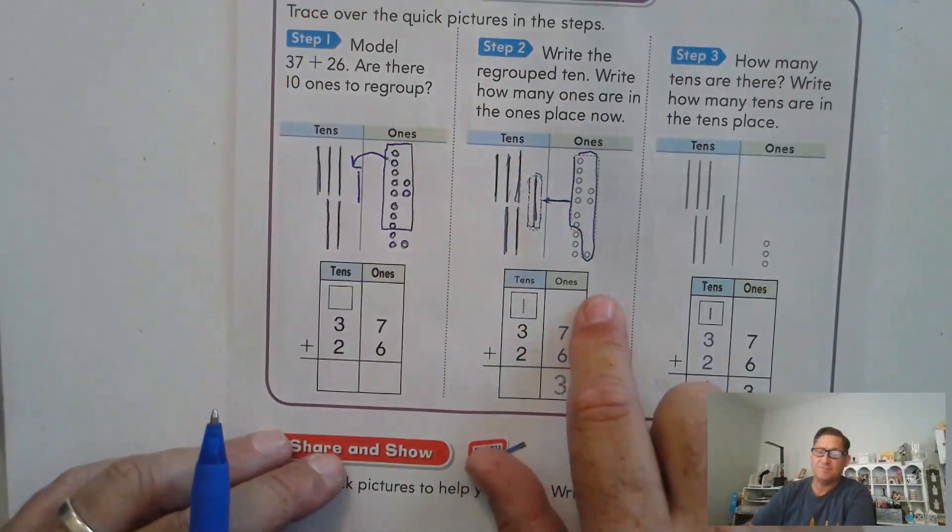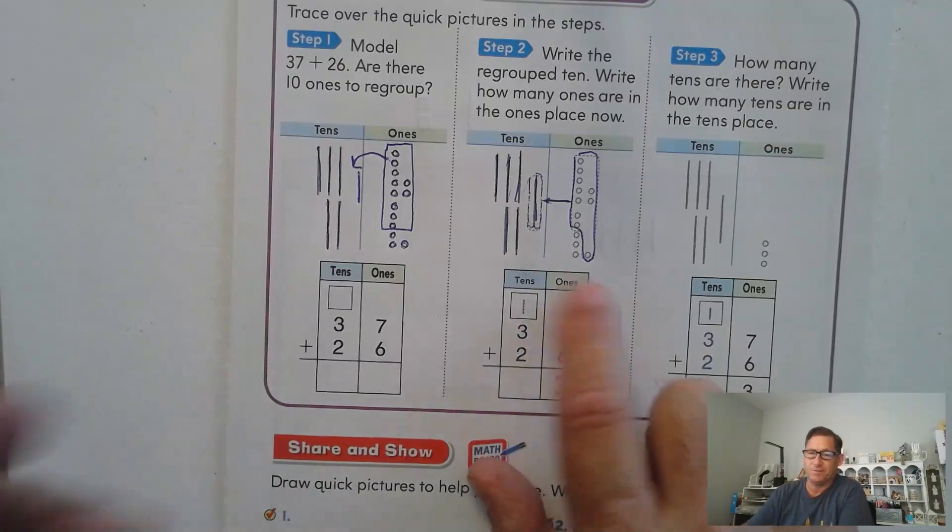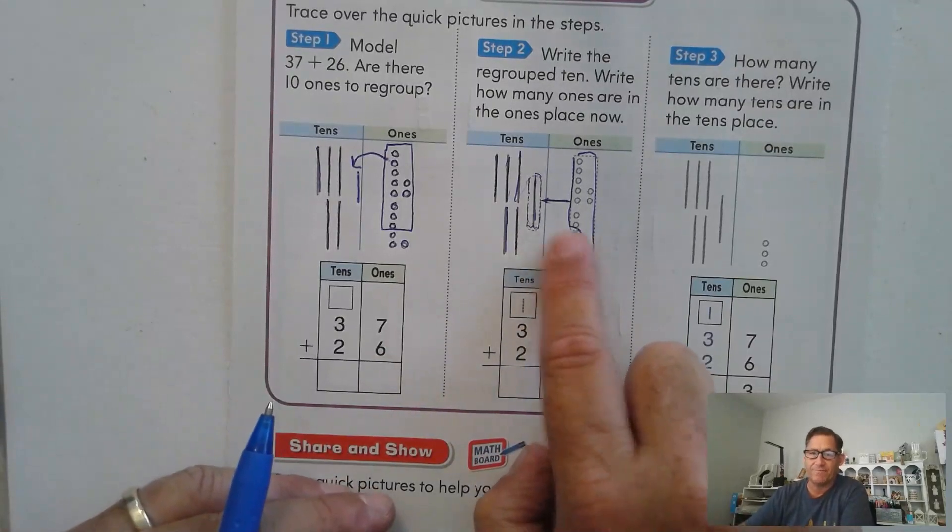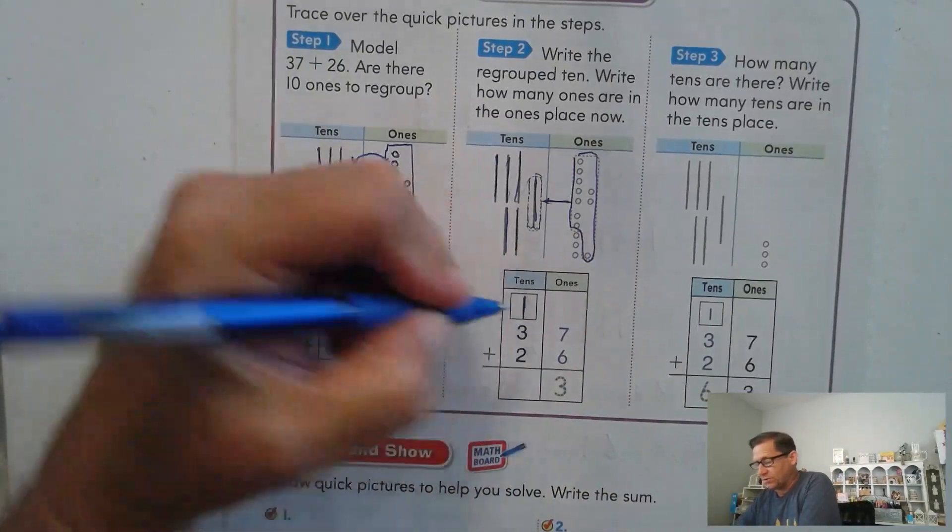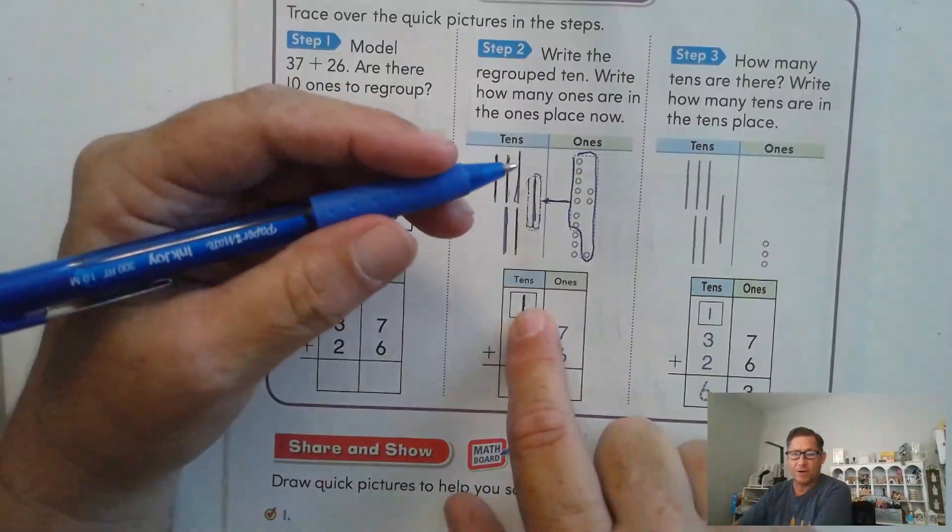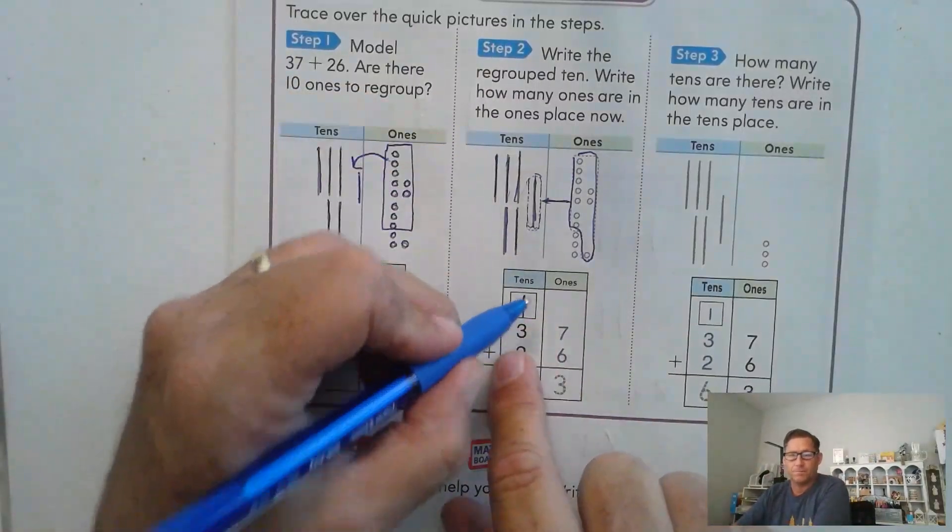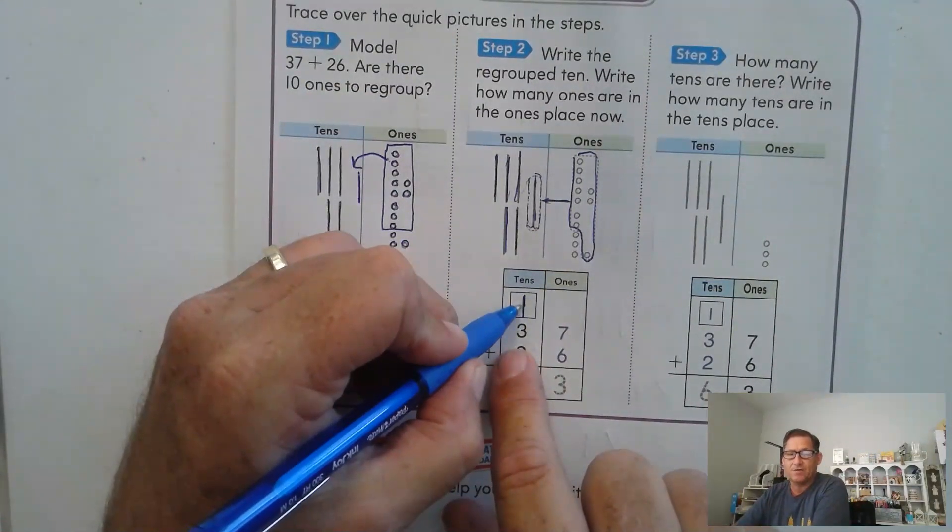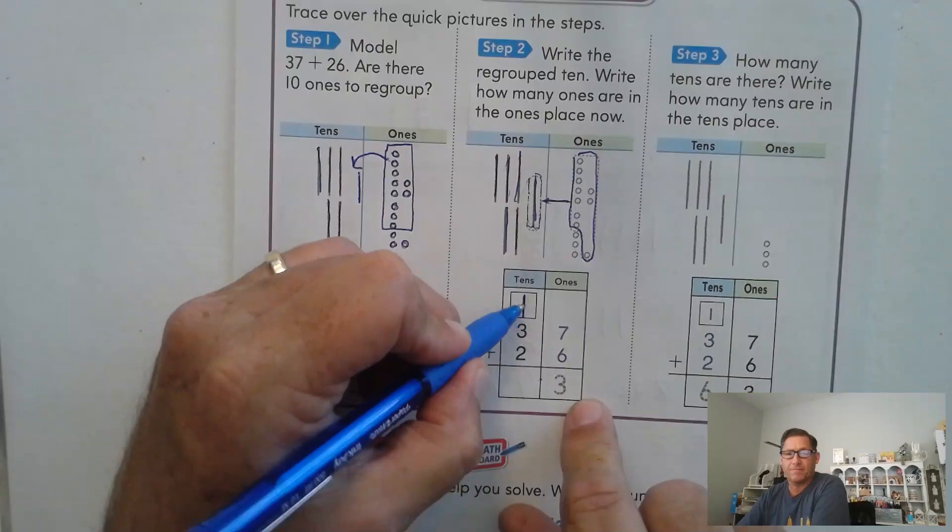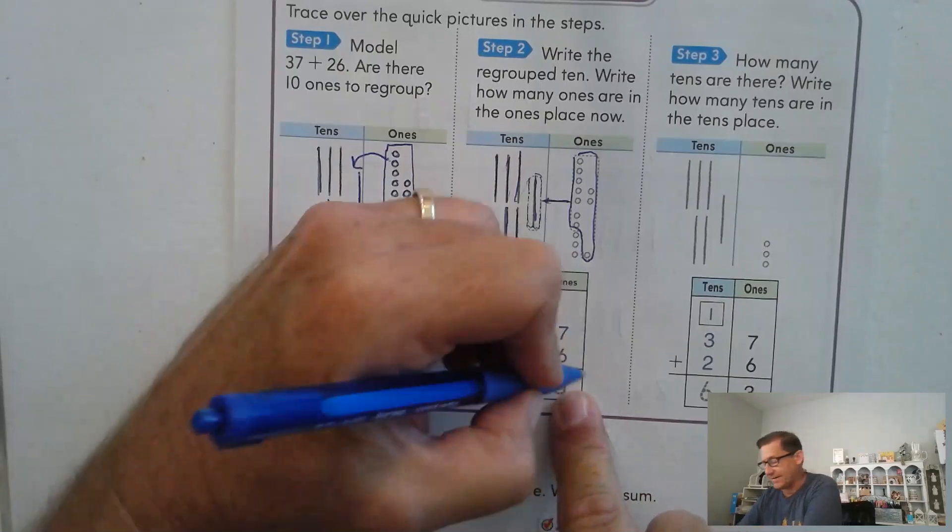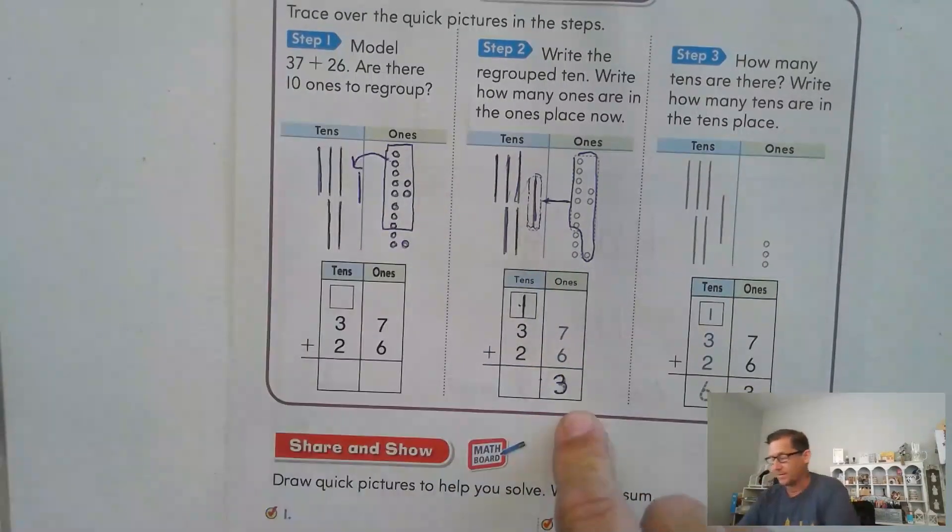Does it matter which 10 we circle? No, we just need 10, right? We both have three left, three and three. So we would show that in the standard way by the box up here shows that we traded 13 ones for one 10, leaving three ones.